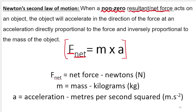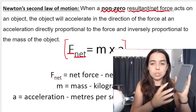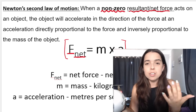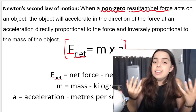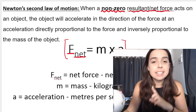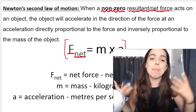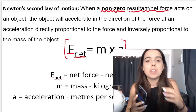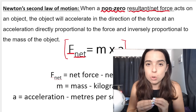The definition says that when a non-zero net force acts on an object, the object will accelerate in the direction of the force. So if I push an object and a non-zero net force acts to the left, that object will accelerate to the left. The acceleration is directly proportional to the force — a big force means a big acceleration, a small net force means a small acceleration. And the acceleration is inversely proportional to the mass of the object.